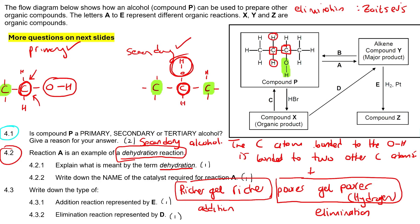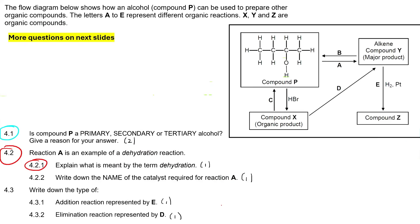So you're either going to lose this one or this one from that carbon. Let's say we choose this one over here. Now, the question actually says: explain what is meant by dehydration and write the name of the catalyst. To explain dehydration, you could just say it is the elimination of water — or H₂O. The catalyst: remember we use different catalysts for different reactions in organic chemistry. This is the one that uses sulfuric acid.